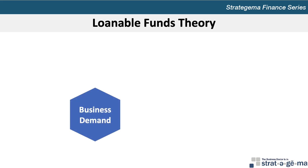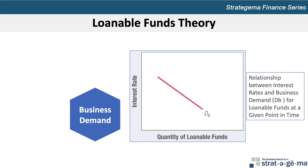Businesses need funds to invest in long-term assets. Business investments in new projects should be greater when interest rates are low, as the cost of financing potential projects should be low. Consequently, businesses will demand a greater quantity of loanable funds at a given point in time if interest rates are lower. That's illustrated in this diagram of the inverse relationship between interest rates and business demand, DB, for loanable funds at any given point in time.